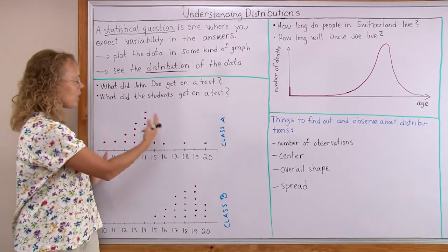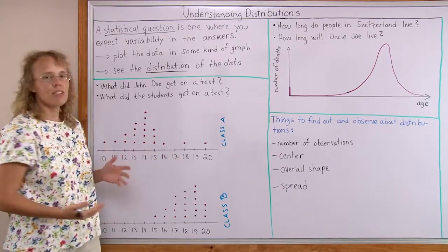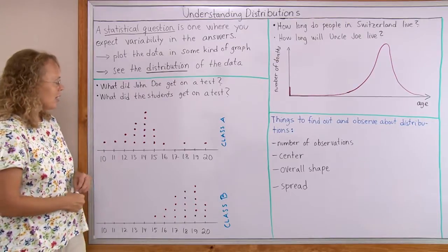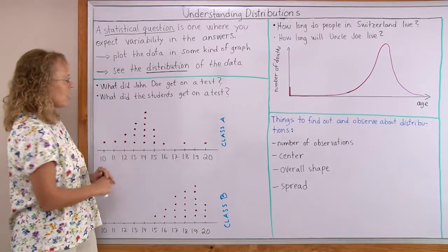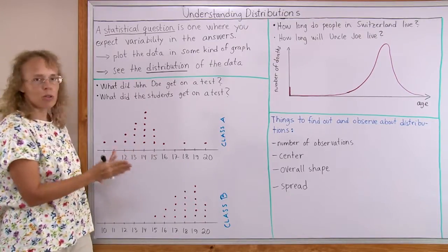And the overall shape, this graph, tells us the distribution of the data. It is how the data lies, how the data is organized when you look at it in a graph.